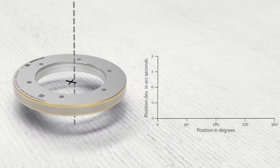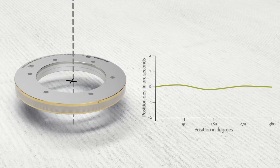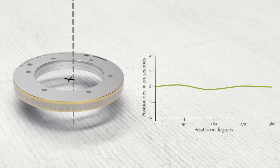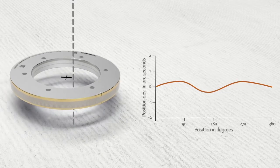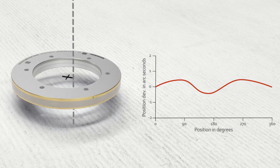If the centering error is minimal, then high accuracy is attained. But if centering is off by only a few micrometers, accuracy drops significantly.